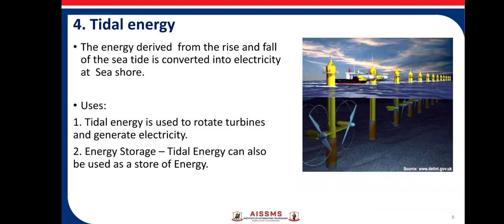The fourth example of renewable energy is tidal energy. The energy derived from the rise and fall of the sea tide is converted into electricity at the seashore. We make use of energy from tides and waves of seas to generate electricity. Uses of tidal energy: tidal energy is used to rotate turbines and generate electricity, and it can also be used as a store of energy.